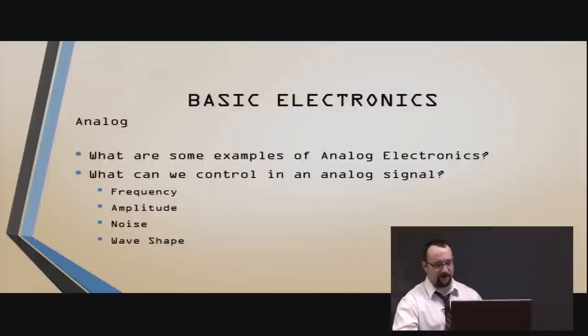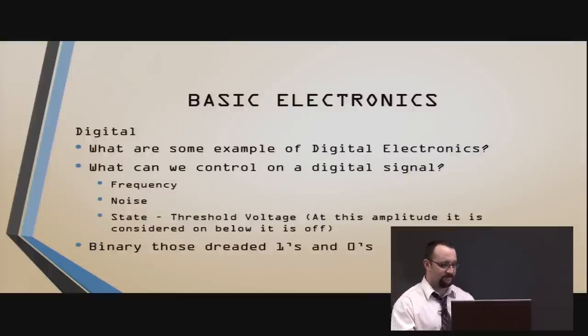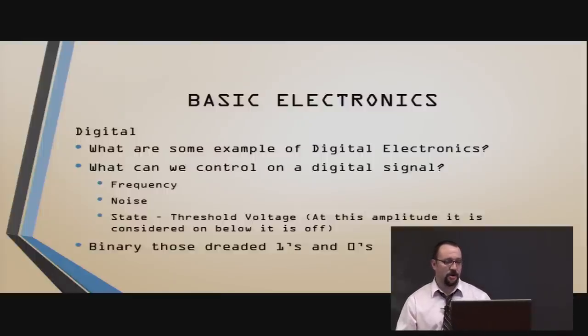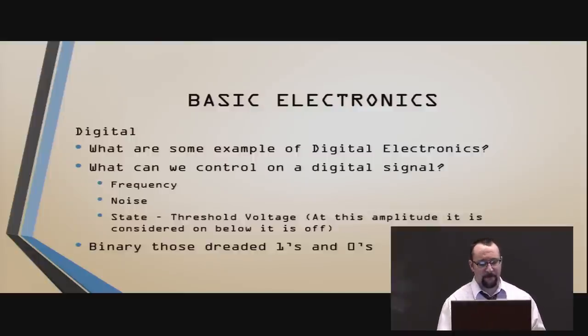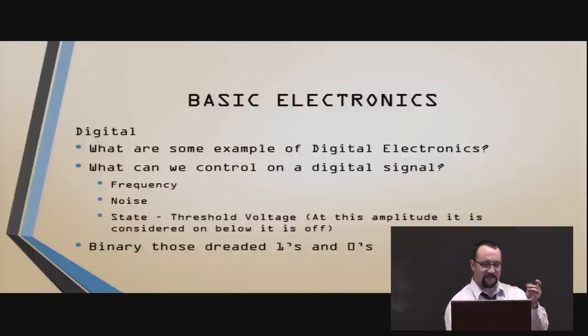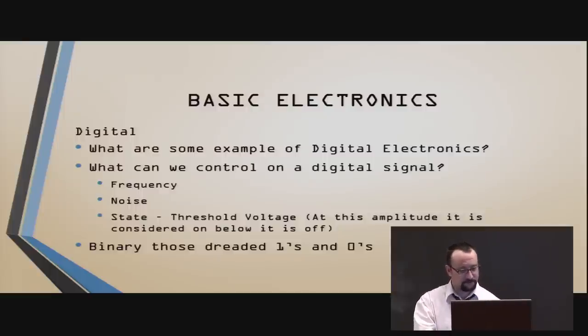Whereas in digital, which I'm sure everybody can name digital devices from a phone to a computer to, well, just about everything today is digital. But we can control the frequency, how quickly it's changing state. We can also control its noise. But most importantly, we control its state. It's either anything above a particular amplitude is considered high, one, and that's how a transistor works. When you have your base pen set to a high or set to a certain level, it tells it, go ahead and switch and allow current to pass through. The simplest of the switches.